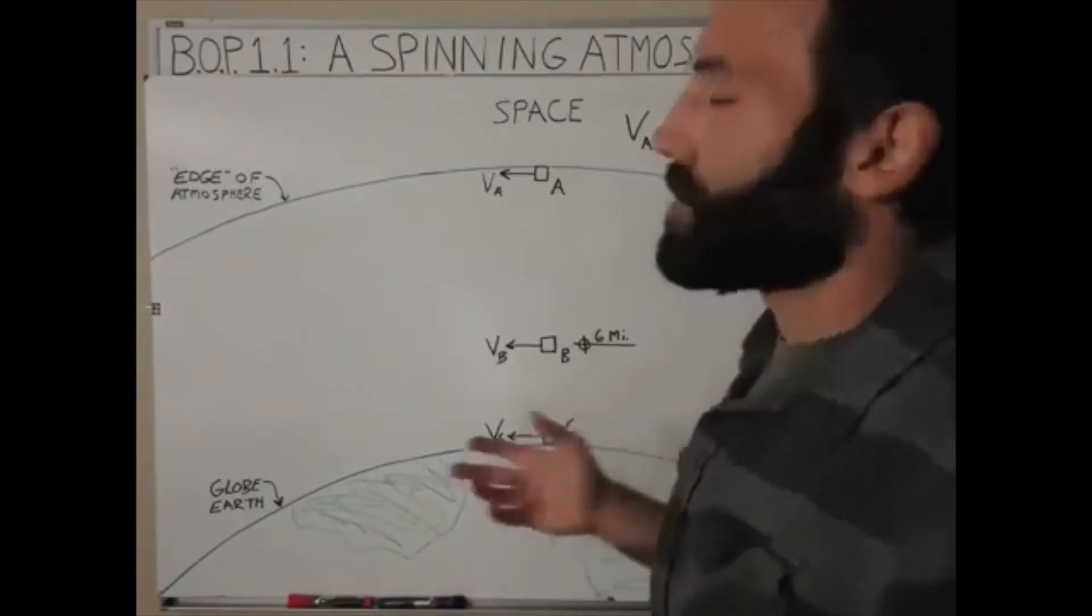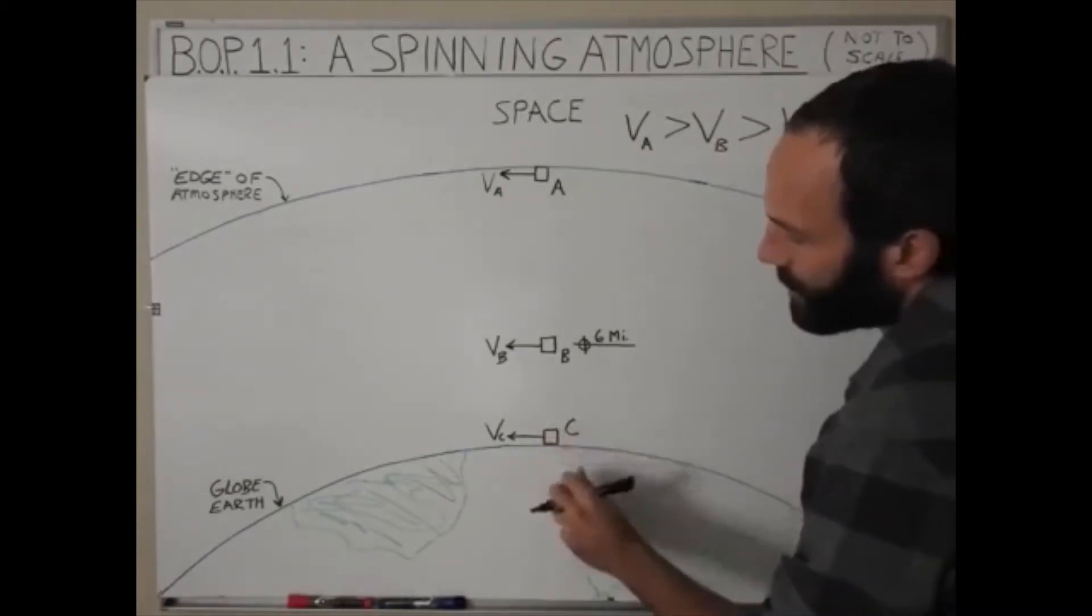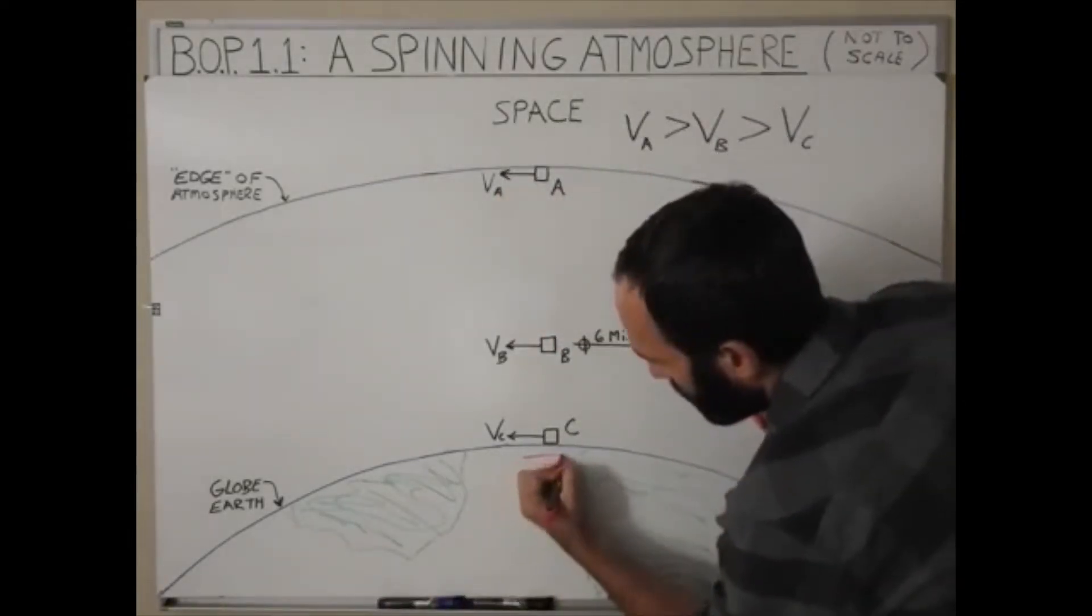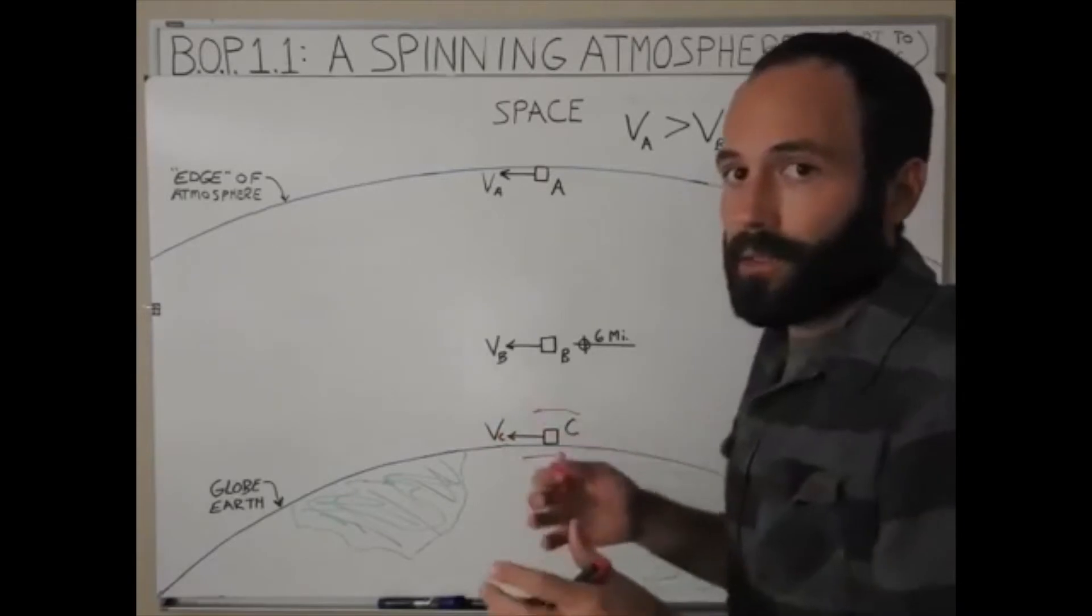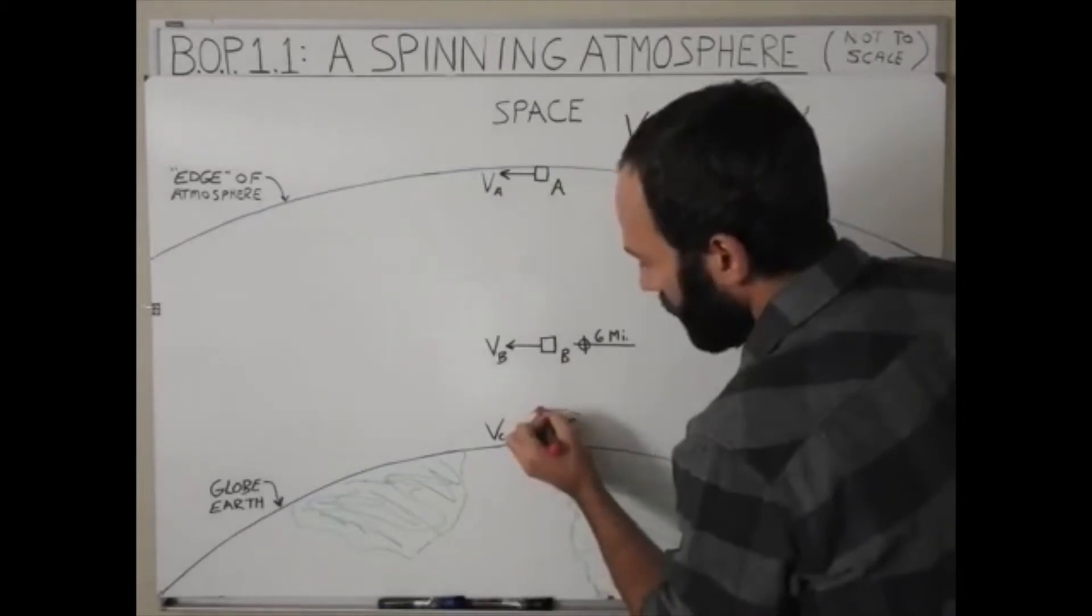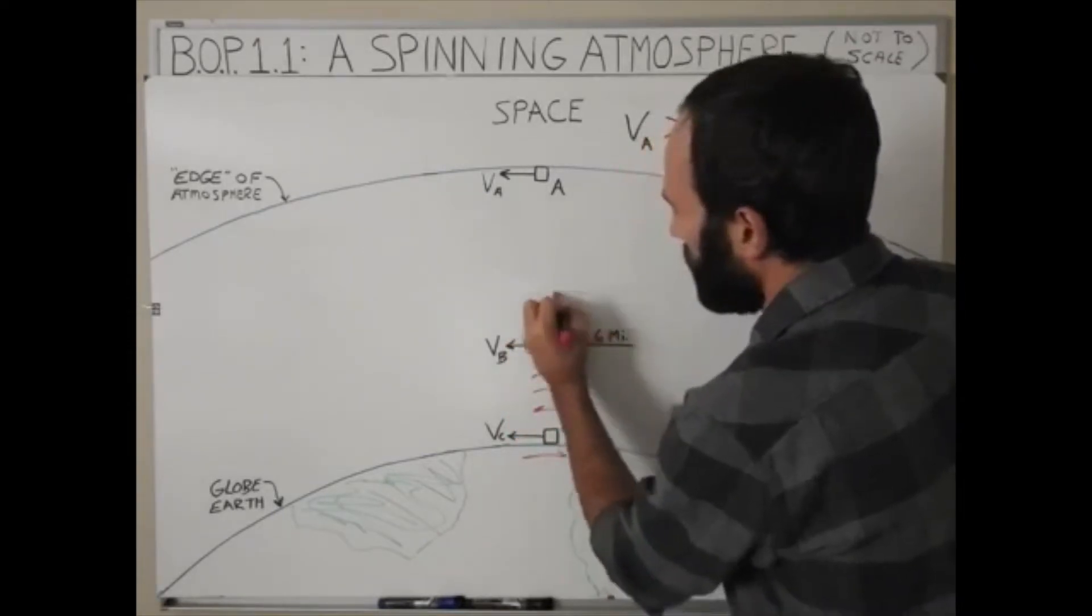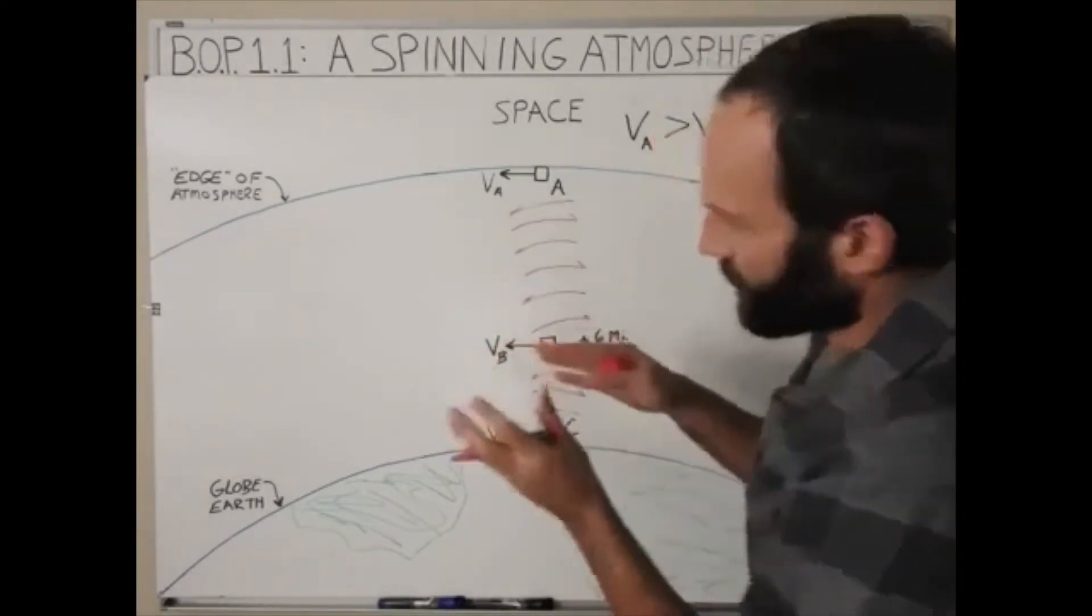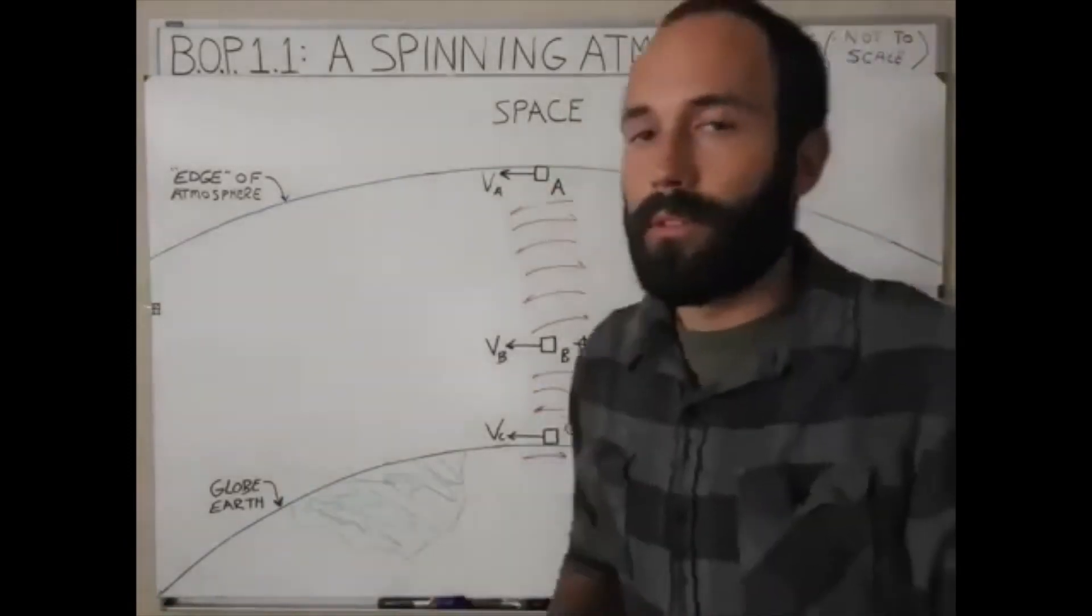So the common explanation for how the atmosphere keeps up with the surface of the Earth is by friction between the air at the surface. There's friction here pushing back on this cubic foot of air down here that's at the surface, and then that's transferred through internal friction, through internal shear forces within the fluid, because air is essentially a fluid, it has viscosity, and so these internal shear forces are transferred all the way up throughout the layers of air. Just the air pushing against itself, the friction carries that force all the way up to keep the atmosphere moving with the Earth.